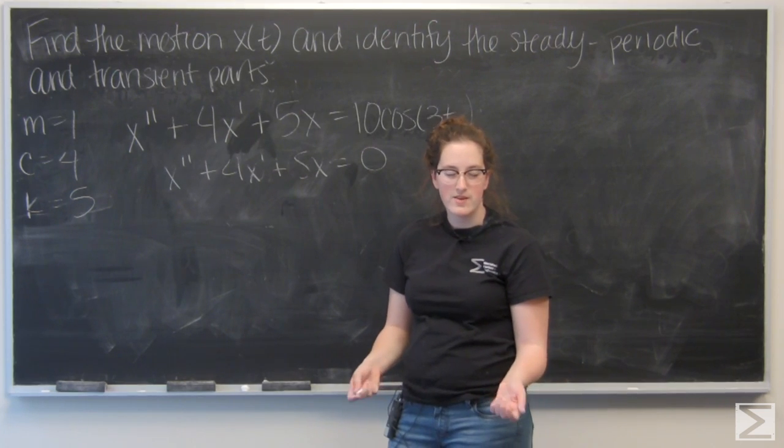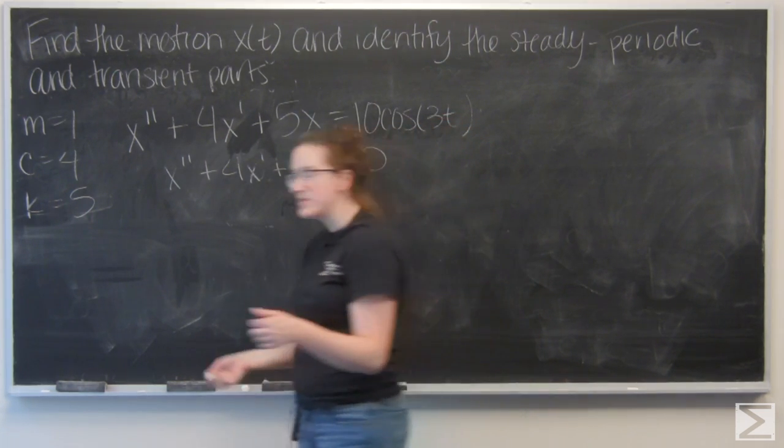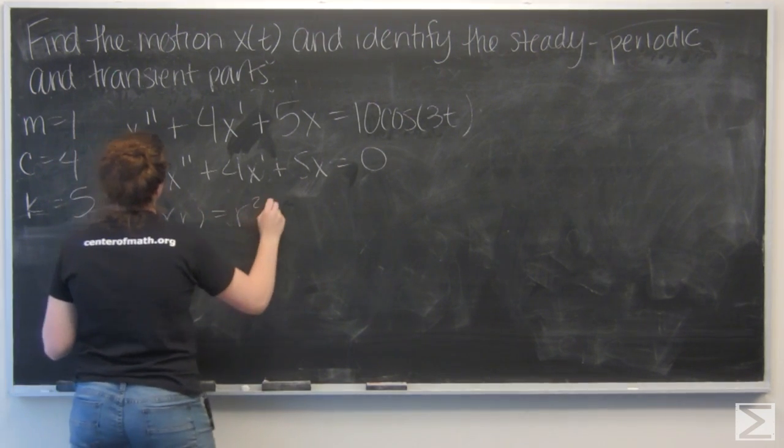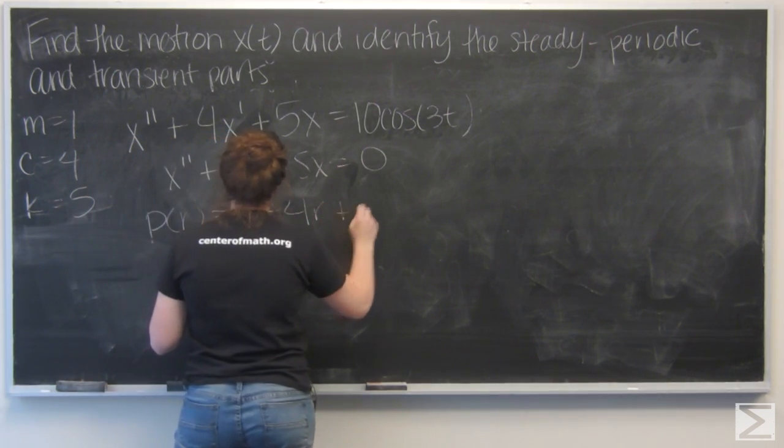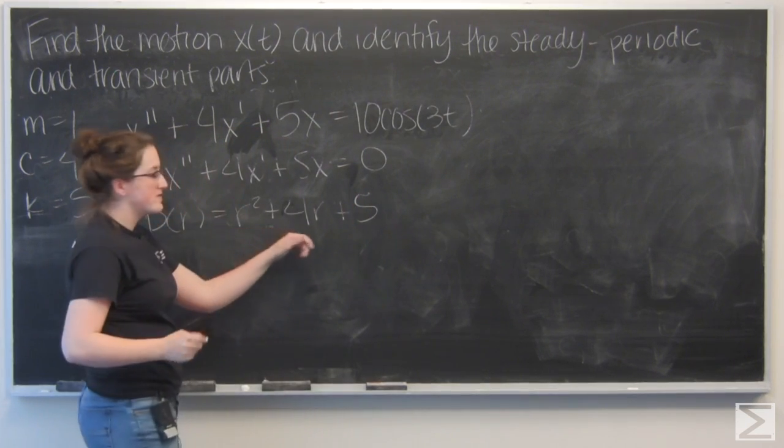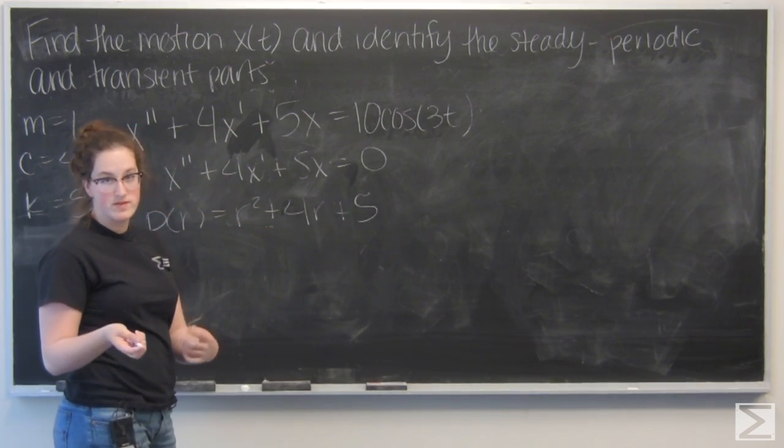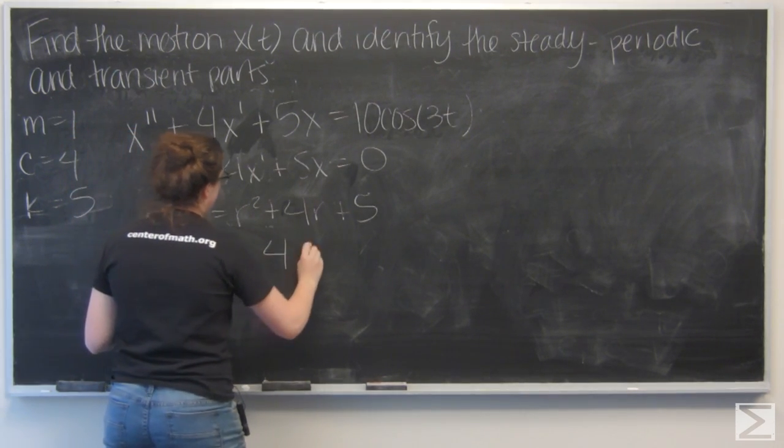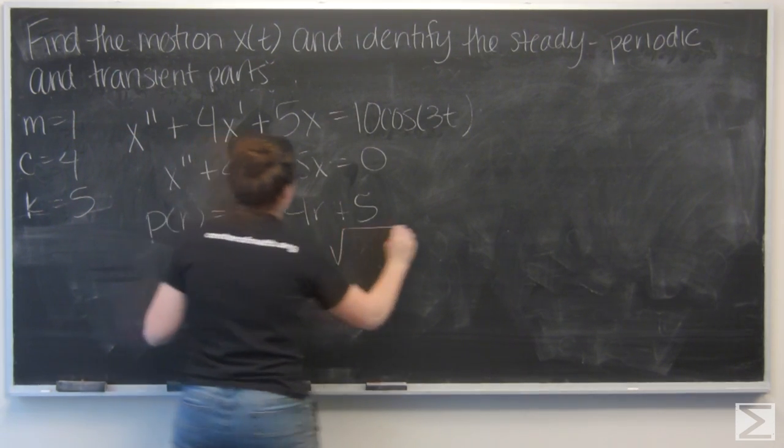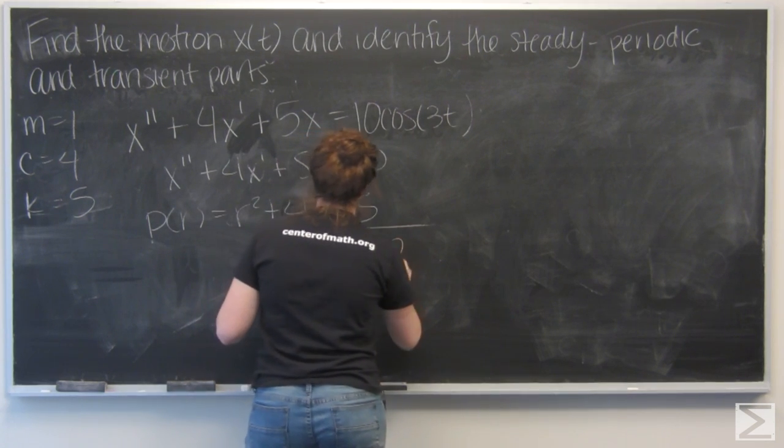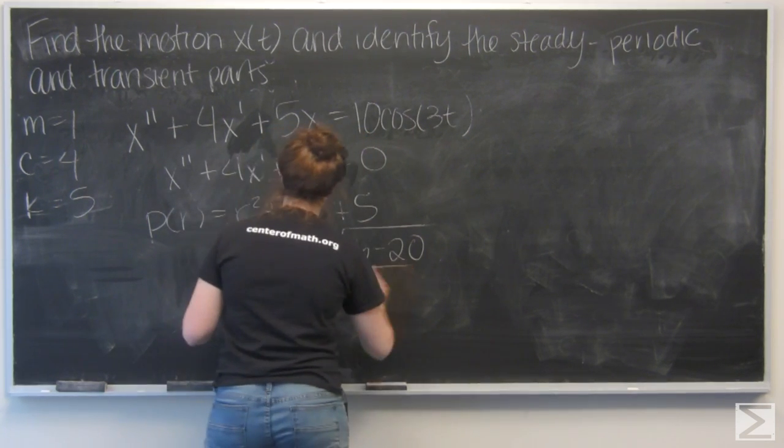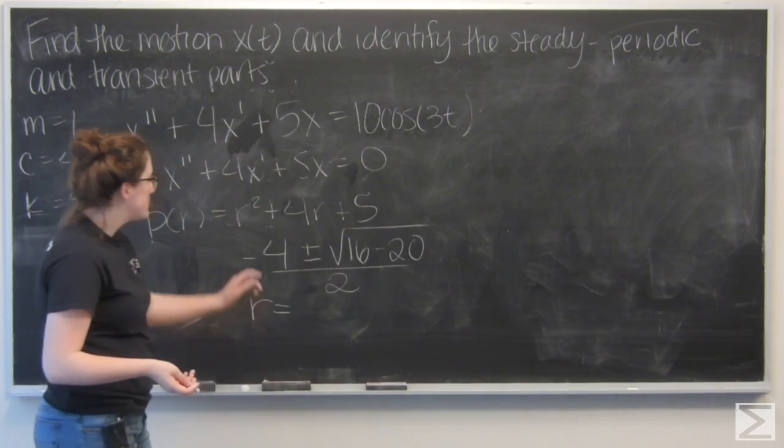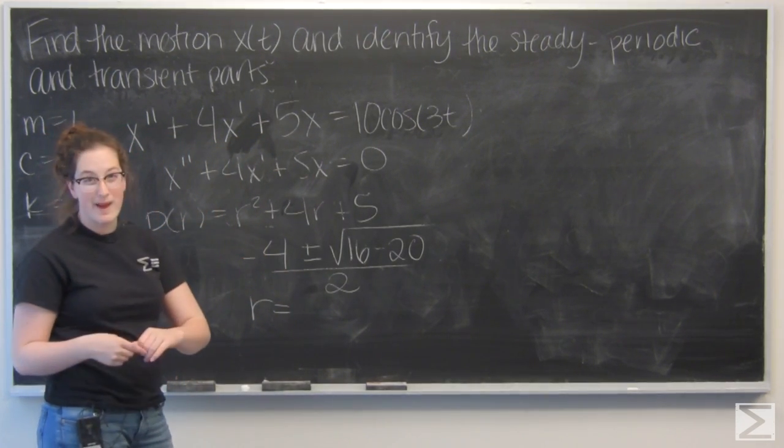So x double prime plus 4x prime plus 5x equals 0. So let's write the characteristic polynomial for this. We've got r squared plus 4r plus 5, and I want to find its roots. I'm going to use the quadratic equation.